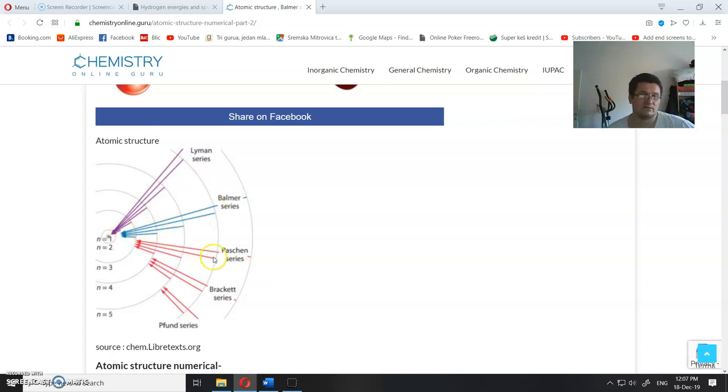Paschen when your electron falls to the n equals 3, Brackett when it falls from 4, and Pfund series, as you can see. Series is because there are series of energies and wavelengths of that photon that is released from here.